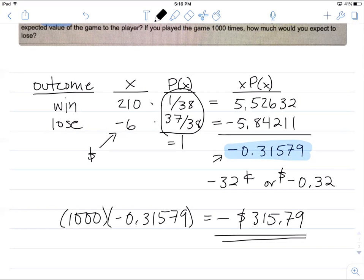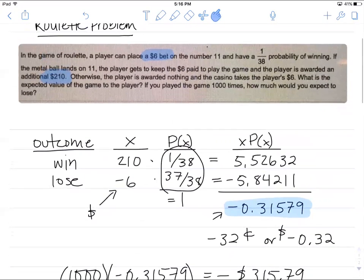Some of the variations you might see would be the different kinds of bets. This is a single number bet example. If for example you had a two number bet, the probability for betting on two numbers would be 2 over 38, and then the payout would be slightly less to compensate for the increased probability of winning.